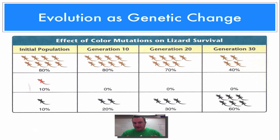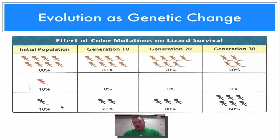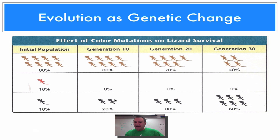Here we have an example from your textbook showing a population of lizards. The initial population has three phenotypes: brown, red, and black. The individuals with the highest fitness would be the brown ones — maybe they live in a desert where the sand is brown, so the brown ones are much more camouflaged. The red ones stand out, and the black ones blend in somewhat but still stand out a little. After 10 generations, there are no more red ones — they've probably all been eaten by birds of prey — and the black ones are becoming a little more common.